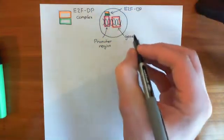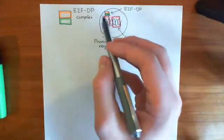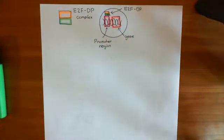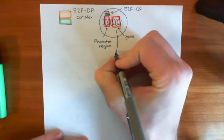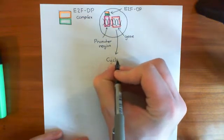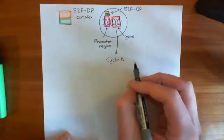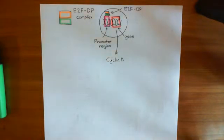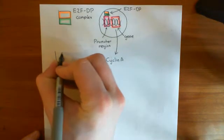So this is what this E2F dimerization partner transcription factor is going to do. It's going to come along, bind to this promoter region, and increase the affinity of RNA polymerase for binding to that promoter region. And that will increase the expression of certain genes. So the expression of the downstream gene is going to be increased. And one of these such genes that is going to have its expression increased is a protein known as cyclin A.